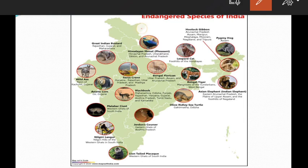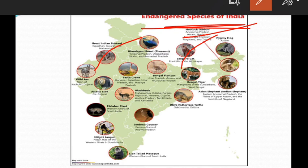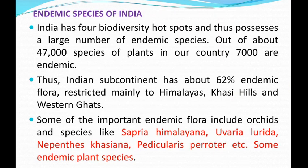Here are a few endangered species of India shown in images: Great Indian Bustard, Leopard Cat, Hoolock Gibbon, Nilgiri Langur, Lion-Tailed Macaque, Black Buck, Malabar Civet — found in the Western Ghats of South India. These are some of the important endangered species.